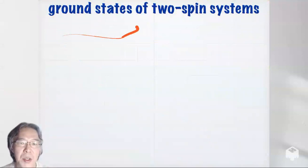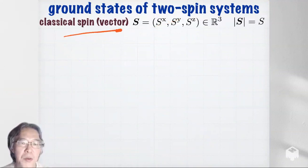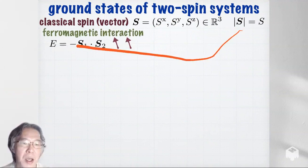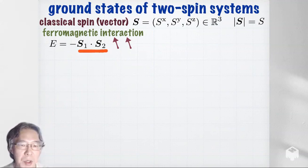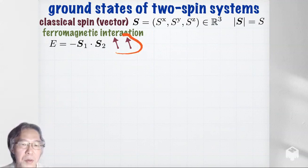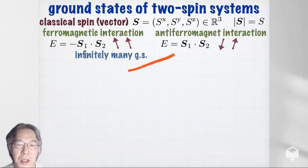I start by discussing ground states of very simple models that consist only of two spins. I start from classical spin, which is just a vector of fixed size. This is the energy for ferromagnetic interaction — simply minus the inner product — and I want to get a ground state by minimizing this energy, so I want to maximize the inner product. Then you simply want the two spins to align with each other, pointing in the same direction. So in this case, there are infinitely many ground states.